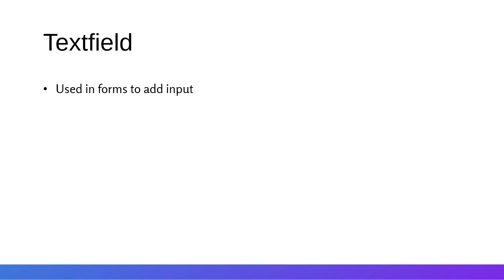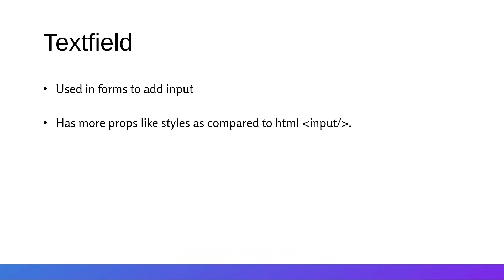The next component we'll be talking about is text fields. Text fields are form inputs used inside forms — they are just the input tags as per HTML inputs, where we can add some data into the form and submit it. The text fields have all the properties of HTML input tags, plus more properties like styles. Material UI has predefined styles like standard, filled, and outlined, and it provides more props like sx and borders.